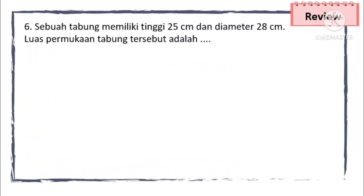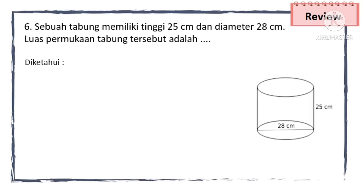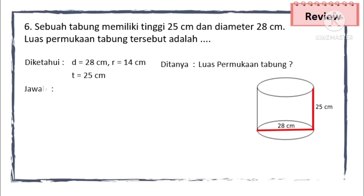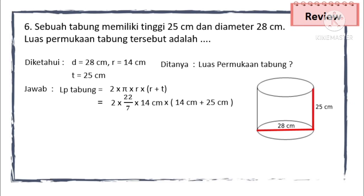Yang keenam: sebuah tabung memiliki tinggi 25 cm dan diameternya 28 cm. Kita diminta untuk mencari luas permukaan tabung tersebut. Diketahui diameternya 28 cm, berarti jari-jarinya = diameter ÷ 2 = 14 cm, dan tingginya 25 cm. Ditanya luas permukaan tabungnya. Rumus: 2 × π × r × (r + t). Kita masukkan: 2 × 22/7 × 14 cm × (14 cm + 25 cm). 14 dibagi 7 = 2, maka 2 × 22 × 2 cm × 39 cm.